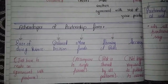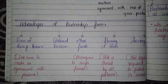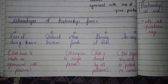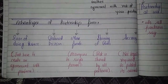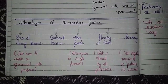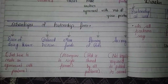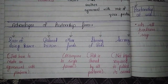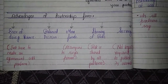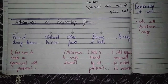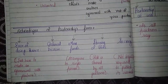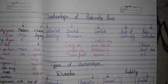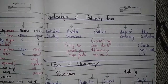The fourth advantage is sharing of risk — risk is shared by all the partners. The fifth is secrecy — in a partnership firm you are not legally required to publish your accounts.